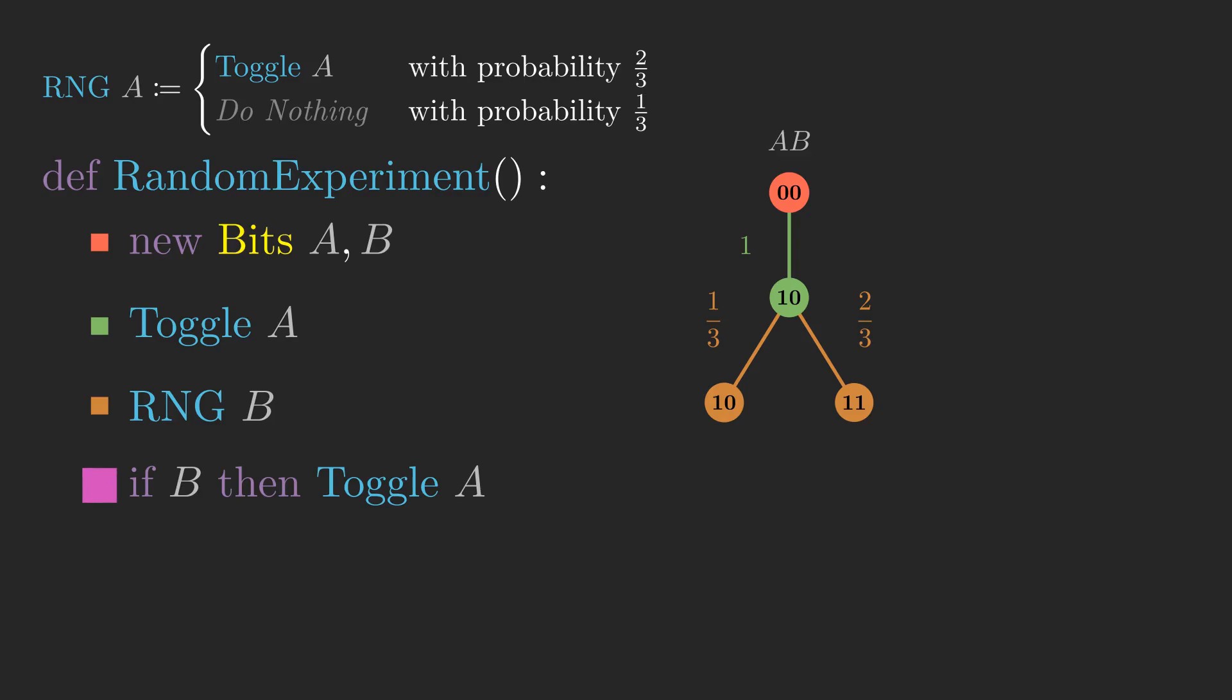We then have one final deterministic step, which toggles A if B is one. In the first branch, B is zero, so the state stays at one-zero. In the second branch, B is one, so A gets toggled, giving us a state of zero-one.